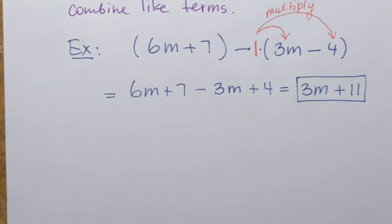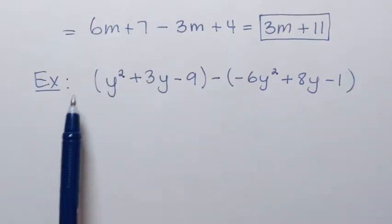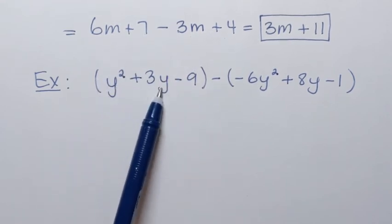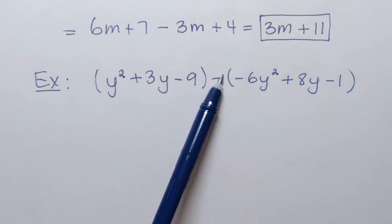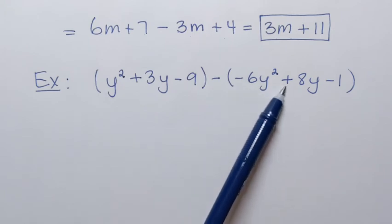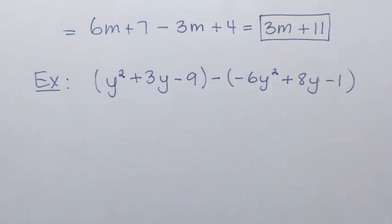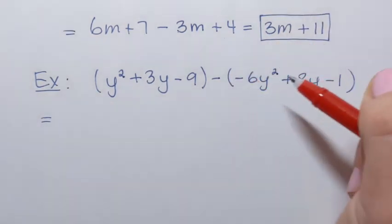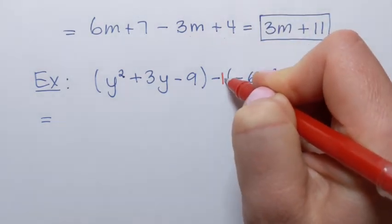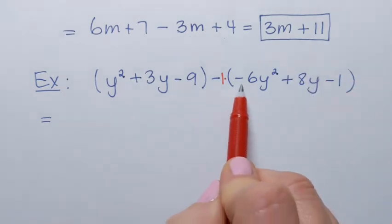Let's try subtracting polynomials one more time with another example. We need to take the trinomial y squared plus 3y minus 9 and subtract the trinomial negative 6y squared plus 8y minus 1. Let's follow the steps — step one is to clear the parentheses. Every time we're subtracting, we have to be careful how we clear the second set of parentheses.